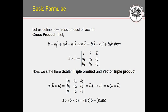For the cross product of two vectors: suppose vector a = a1 i-cap + a2 j-cap + a3 k-cap and vector b = b1 i-cap + b2 j-cap + b3 k-cap. Then a × b is computed as the determinant with first row [i, j, k], second row [a1, a2, a3], and third row [b1, b2, b3].